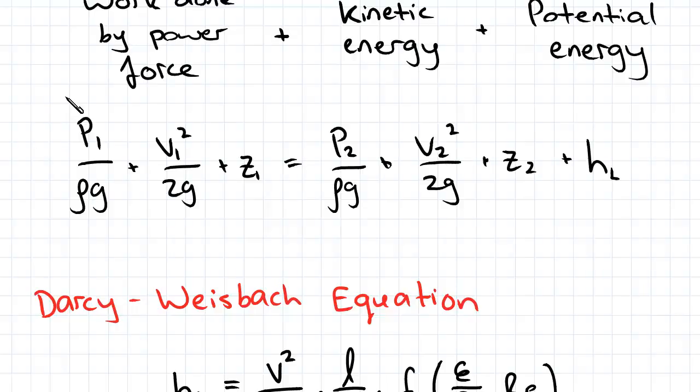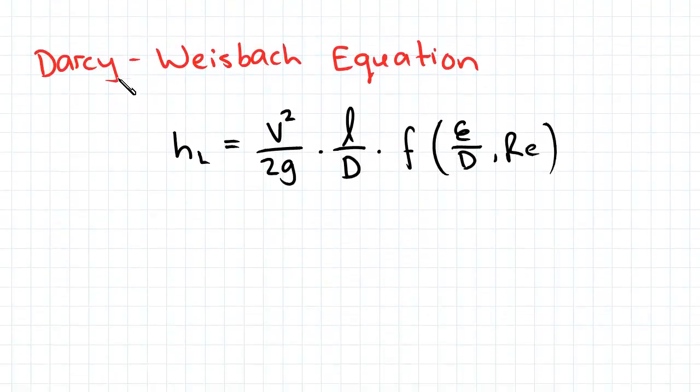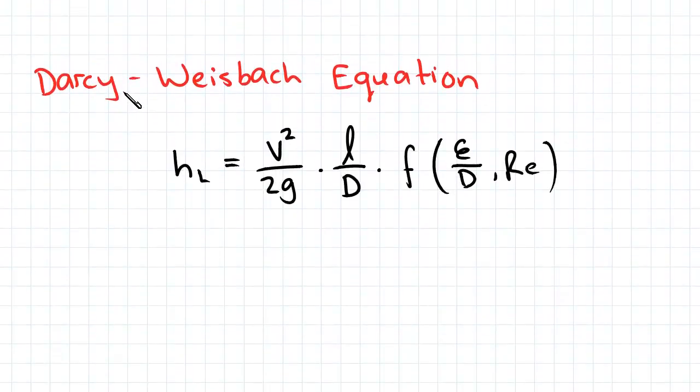But most of the time we have to find head loss, and it turns out that the equation for head loss has a similar function to the pressure gradient for turbulent flows. So this is defined as the Darcy-Weisbach equation, which is this one here, and that accounts for major losses.